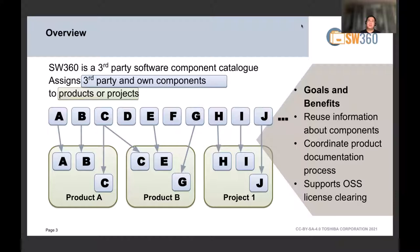When thinking about software components, it's not just open source — there's also freeware that can be freely used but isn't available as open source, shareware, and commercial software shipped as part of a product. There can be any kind of third-party software components, and even internal components from different business units or subsidiary companies. Whatever your product contains in terms of software components — third-party or own — you want to understand the software bill of material, and SW360 manages this.